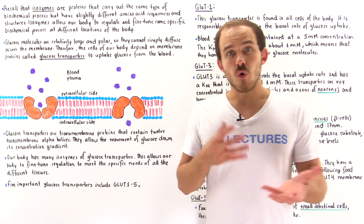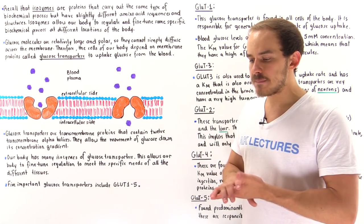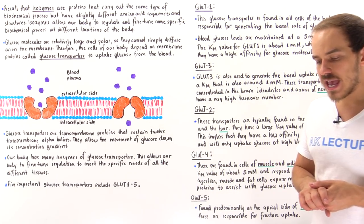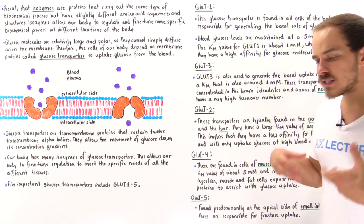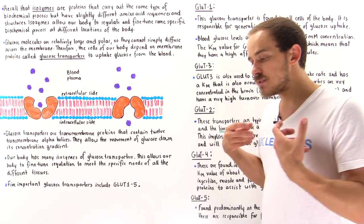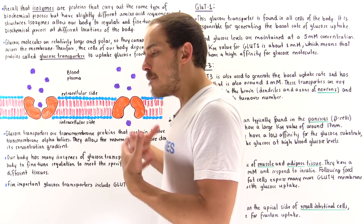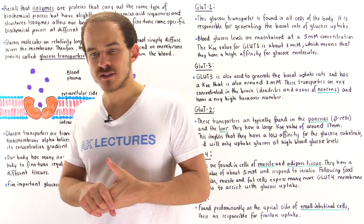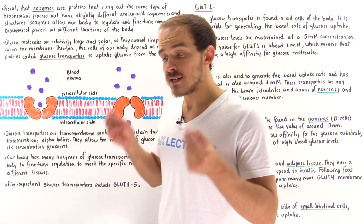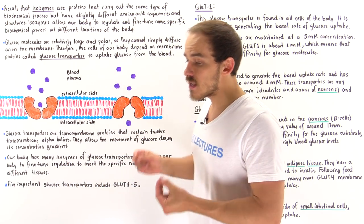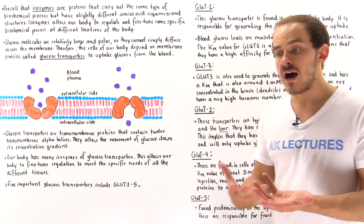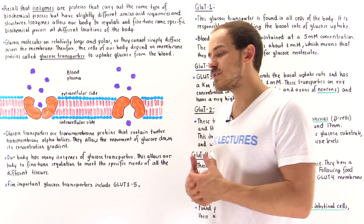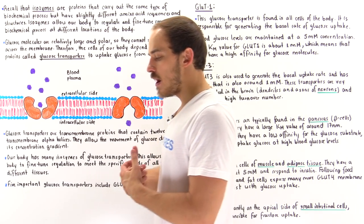Inside our body we have all these different types of cells, trillions of cells. And these cells carry out these biochemical processes. Many of these biochemical processes exist in every single cell of our body. For instance, glycolysis takes place in every single cell of our body.